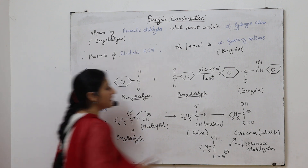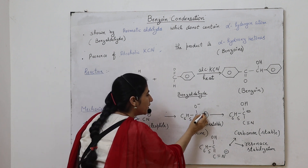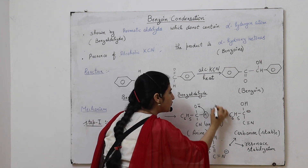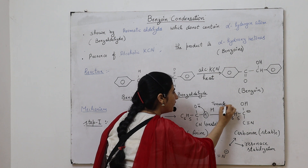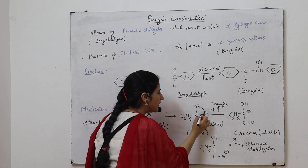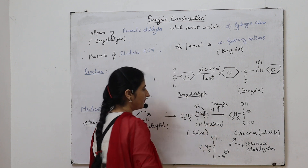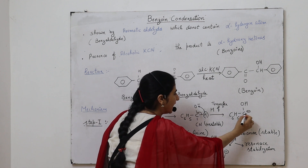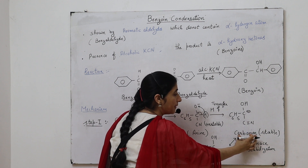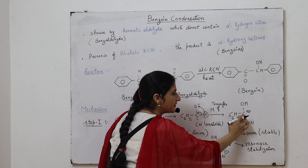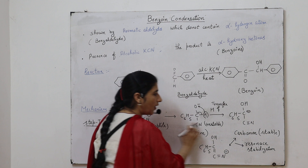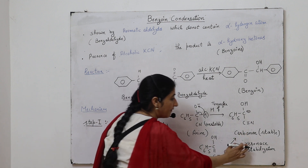This anion is highly unstable. To make it stable, there is a transfer of a proton toward the oxygen. When there is a proton transfer, the carbon-hydrogen sigma bond migrates toward the oxygen, resulting in the formation of a negative charge on the carbon. This anion is known as a carbanion because the negative charge is present on the carbon. This carbanion is more stable than the previous anion because it is stabilized by resonance.